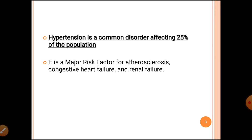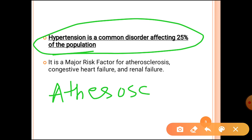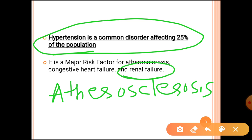Hypertension is a common disorder that affects 25% of the population and is one of the major risk factors. Hypertension can lead to sclerosis of the artery — hardening of the artery — so you can develop atherosclerosis. This atherosclerosis is one of the major causes for ischemic heart disease, heart attack, heart failure, myocardial infarction, and by sclerosis of the renal artery it can lead to renal failure as well.